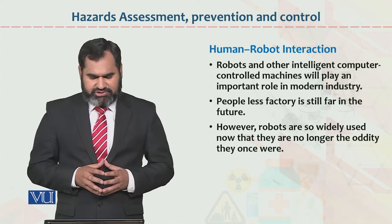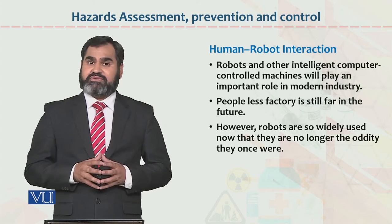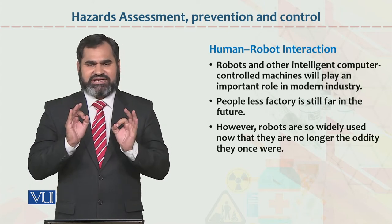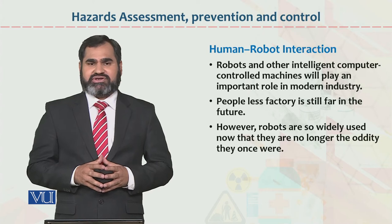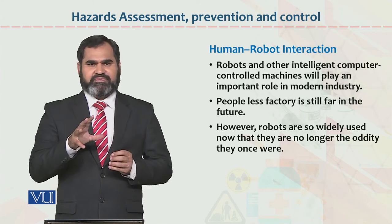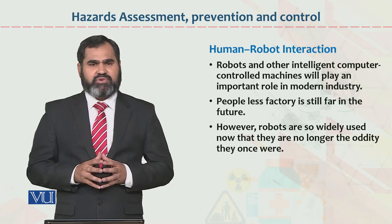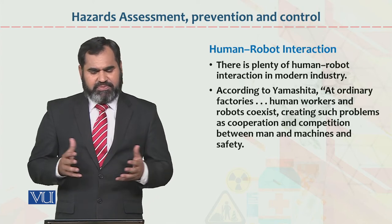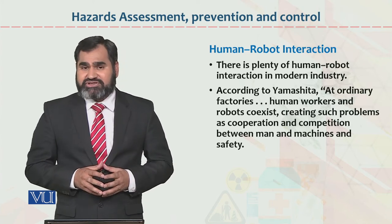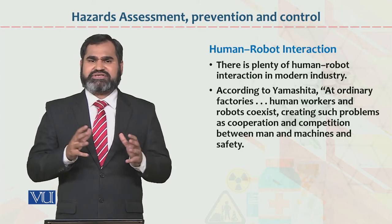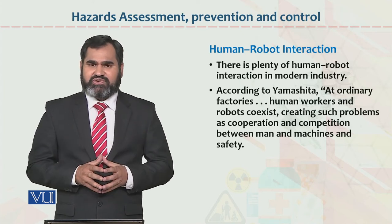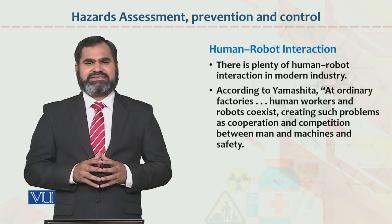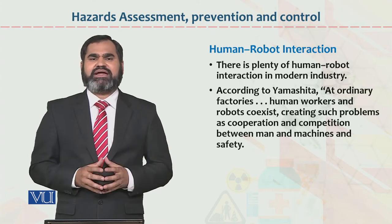Robots and other intelligent computer-controlled mechanics will play an important role in modern industry. Robots have brought very important revolutions in technology. You give a robot instructions and it automatically works according to your instructions. This involves instructions, technology — all these things combined, and we call this human-robot interaction. There is plenty of human-robot interaction in modern industries. If you want to use robots more and more, you need expert manpower behind them, because the robot works according to the instructions given to it. With human-robot interaction, the progress, performance, and productivity of organizations has been significantly enhanced.